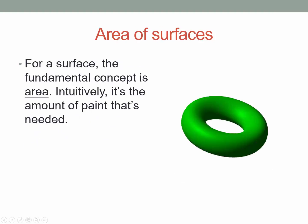For surfaces, the fundamental concept isn't length. You don't talk about a length of a surface. You talk about an area of a surface. And intuitively, it's the amount of paint that's needed. So here I have a doughnut. Remember, again, I just want to think about the surface of the doughnut, not the dough inside, but just the surface. So it would be the amount of crust or the amount of paint for that doughnut.